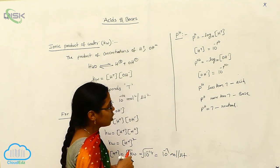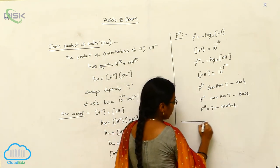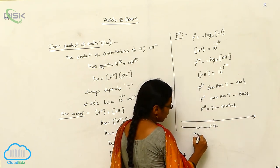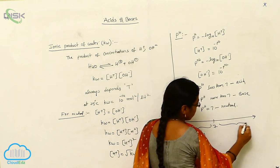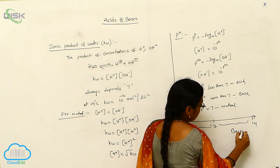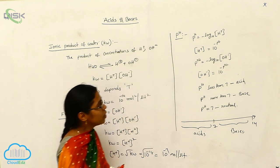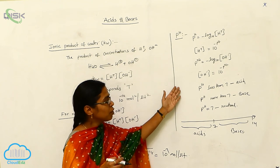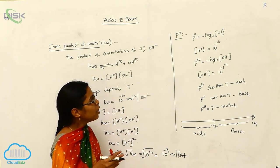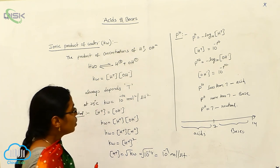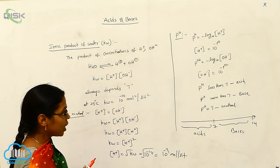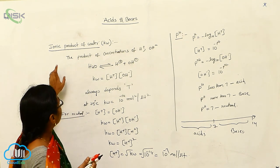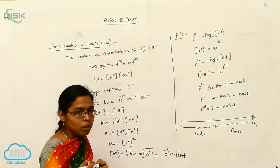If the pH is equal to 7, the solution is neutral. On the pH scale, values below 7 are acids and values from 7 up to 14 are bases. The pH scale has 14 units, which can be proved based on the ionic product of water.